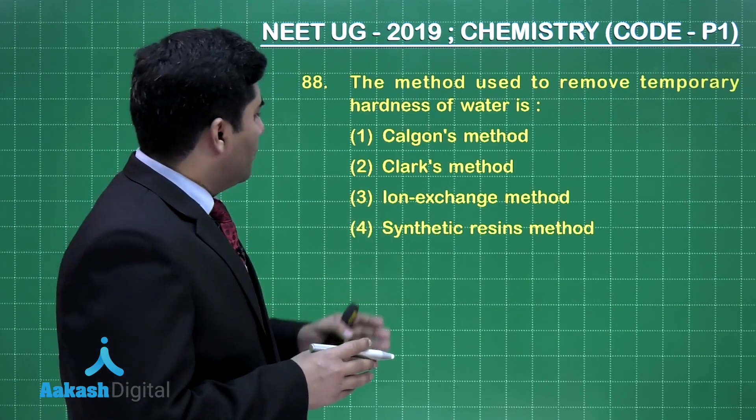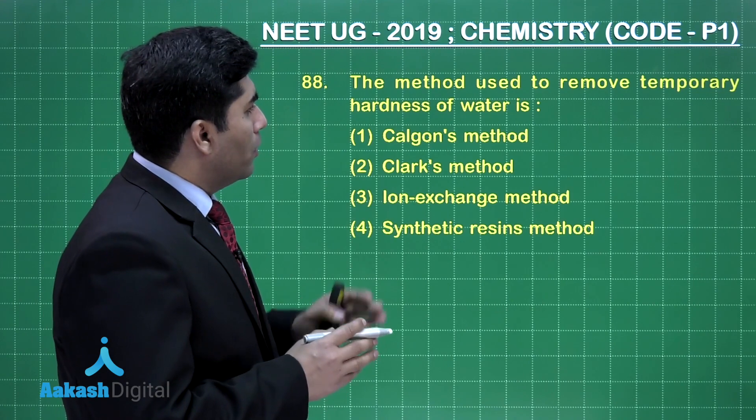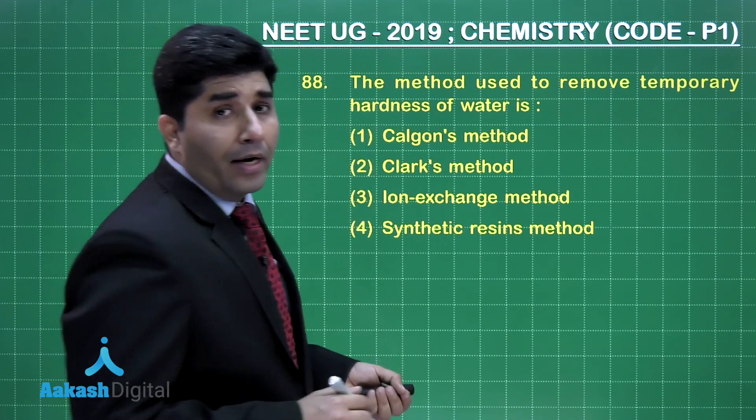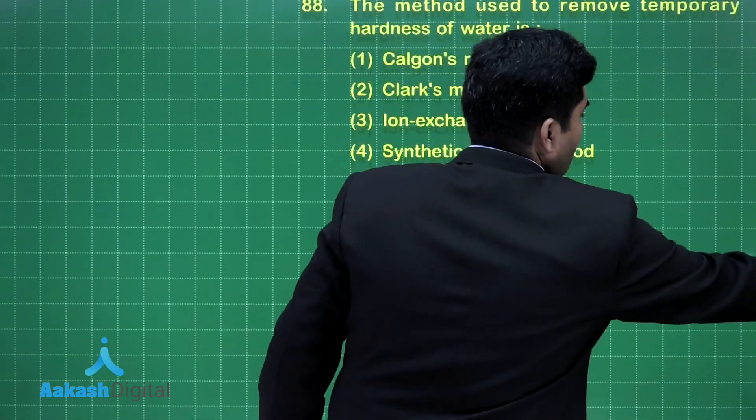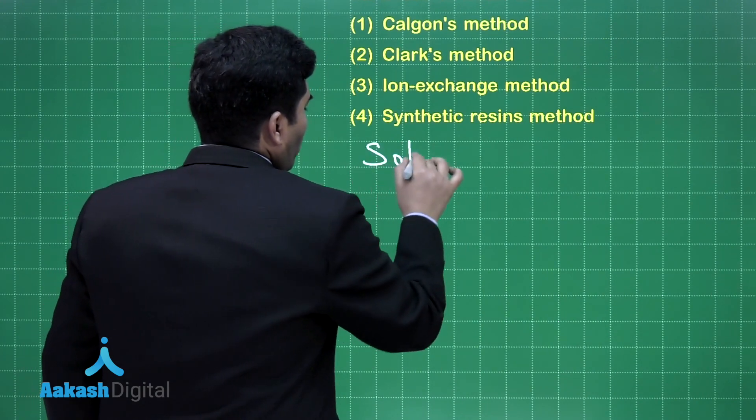Now, we have already studied in NCERT that Clark's method is used for removing the temporary hardness. How? Let us see the solution.